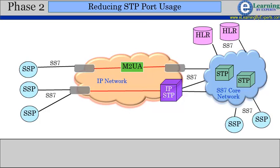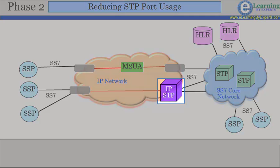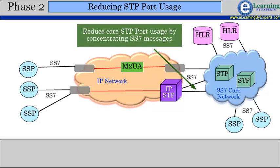Phase 2 of SIGTRAN involves introducing IP-based STP in the network, thereby reducing the allocation, reservation, and usage of legacy STPs. This is another step towards cost saving on TDM links. In IP-based STPs, the SIGTRAN protocol deployed is M2PA.